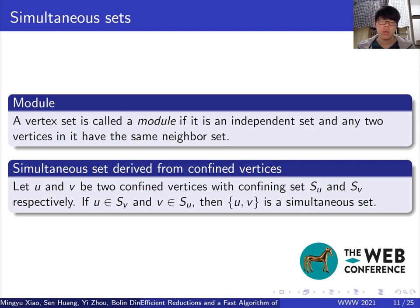Another one is derived from confined vertices, given a set S. If S is a subset of the confining set of any vertex in S, then S is simultaneous.